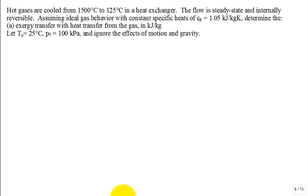Hot gases are cooled from 1500°C to 125°C inside a heat exchanger. The flow is steady-state and internally reversible, meaning there's no pressure drop. Assuming ideal gas behavior with constant specific heats, you're told it needs to be treated as an ideal gas with that value for c_p.